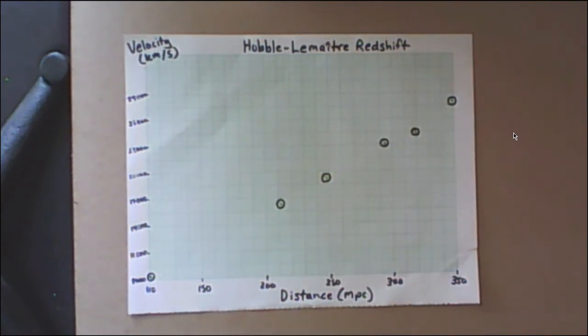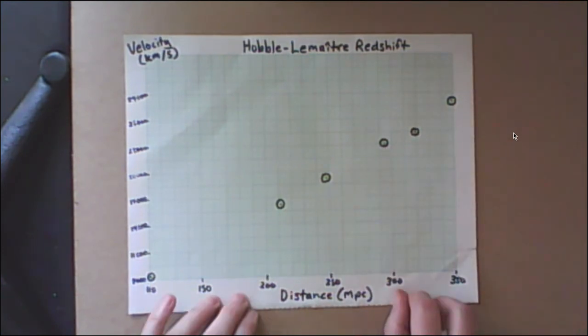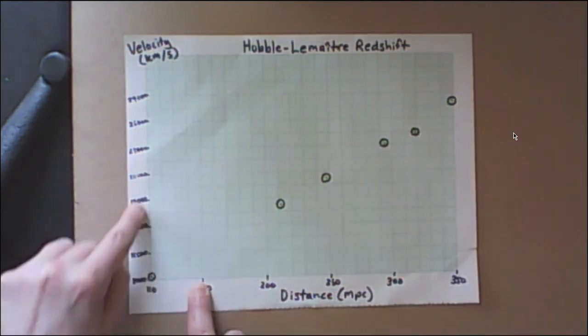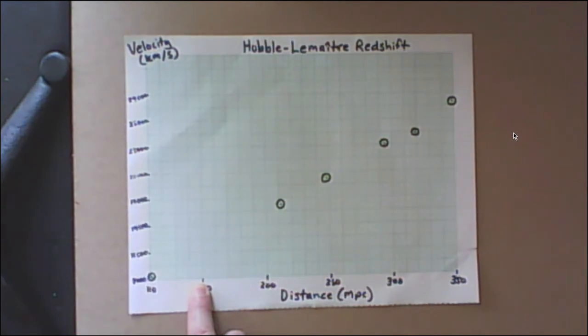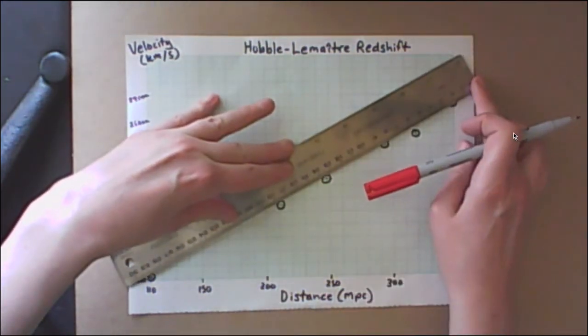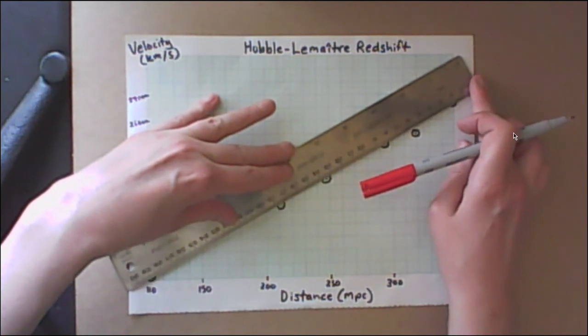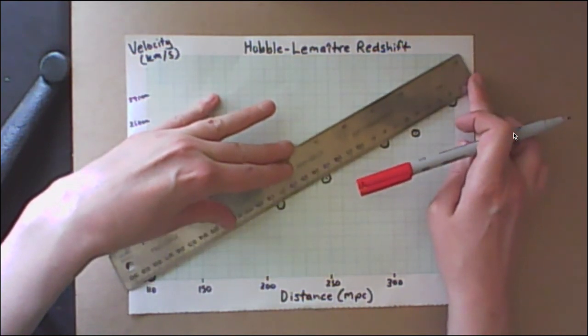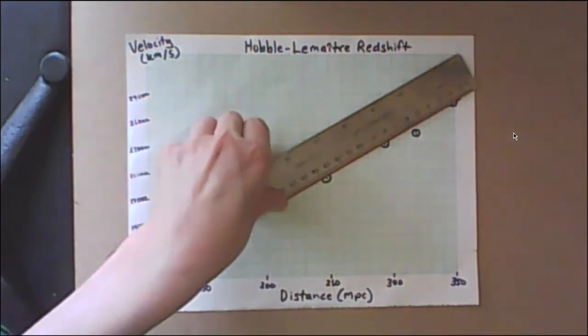So you can see just by looking at this data that, yeah, it does basically look linear, which is what we expected. That's what Hubble discovered, that the velocity that a galaxy appears to be traveling away from us is directly proportional to how far away that galaxy is from us. So we're going to fit a straight line through the data now. And as always, you don't have to hit every single point, but you do want to represent the overall trend of the data.